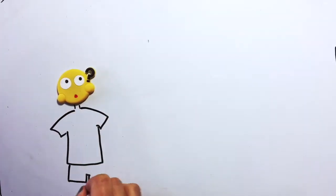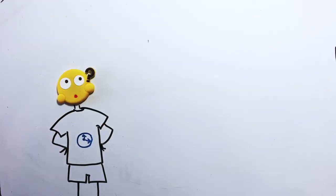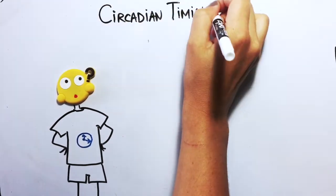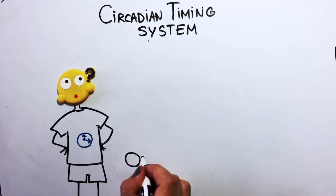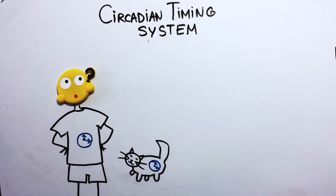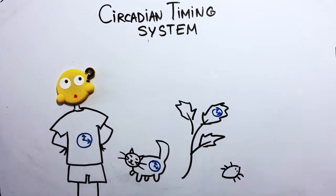Each of us has an internal clock system that tunes our body's biology and behavior to the right time of the day. It is called the circadian timing system and in fact all living organisms, mammals, insects and plants have evolved such clocks.